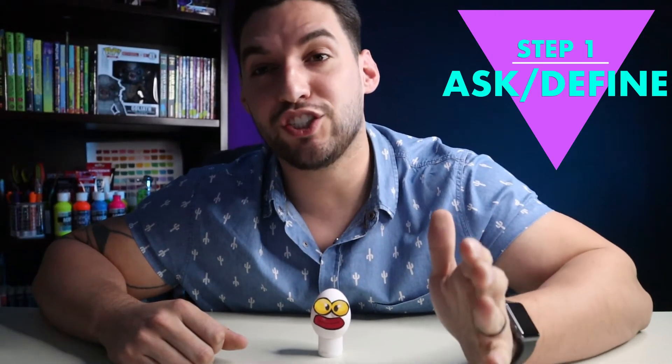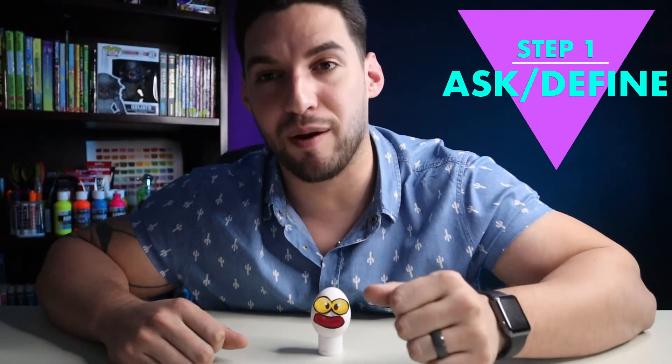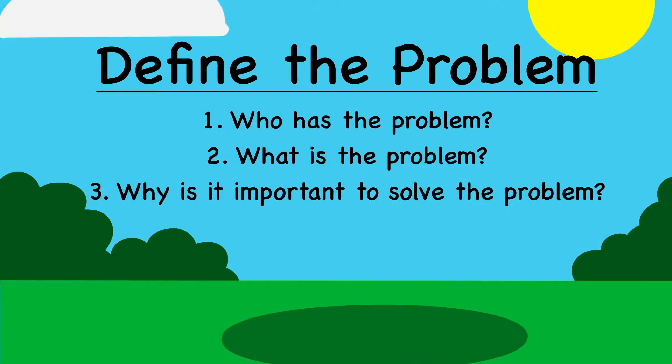The first step of the engineering design process is to define the problem. We need to ask ourselves: who has the problem, what is the problem, and why is it important to solve the problem? If you're watching this in class right now, go ahead and pause the video and discuss amongst yourselves who has the problem, what is the problem, and why is it important to solve the problem. Once you have those answered, press play.